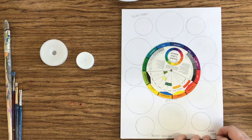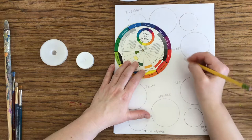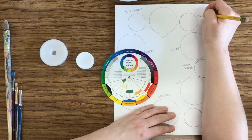So if I mix red and orange I get red-orange. If I mix red and violet I have red-violet. And if I mix blue and violet I have blue-violet.